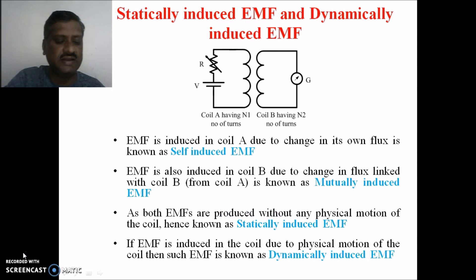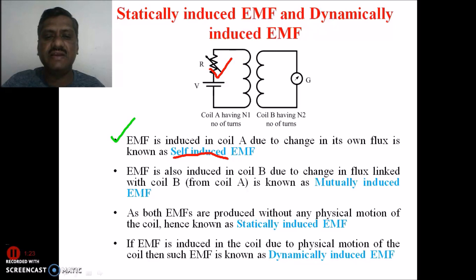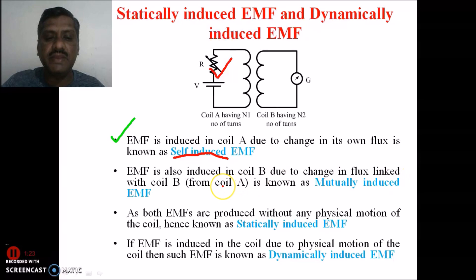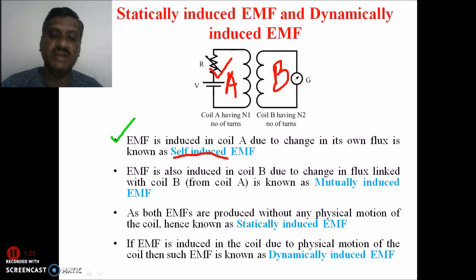The EMF induced in coil A due to the change in its own flux is known as self-induced EMF — if its current or flux changes and EMF is induced in coil A itself, then it is known as self-induced EMF. Similarly, EMF induced in coil B due to change in the flux linked with coil B from coil A is known as mutually induced EMF — if the current or flux of coil A changes and EMF is induced in the coupled coil B, this EMF is known as mutually induced EMF.